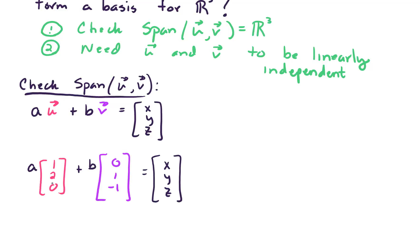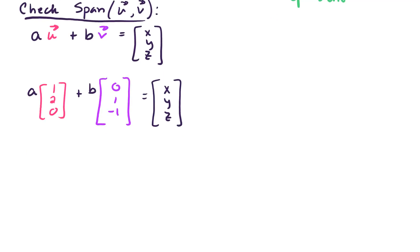So working through scalar multiplication and vector addition on the left-hand side, what do we get? Well we get 1a, 2a, and 0a plus second vector 0b, 1b, minus 1b. And that equals x, y, z.